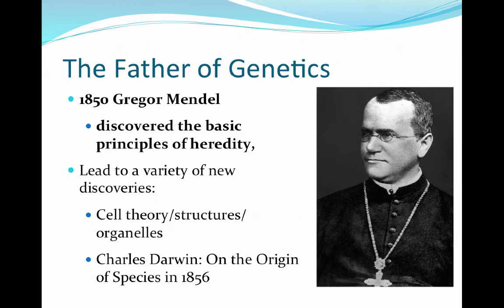And then we get to the father of genetics, Gregor Mendel, who was a monk. He discovered the basic principles of heredity using pea plants. He was able to identify that certain structures on peas — whether the color of their flower or the type of seed coating, wrinkled or smooth — were translated from one generation to the next, and offspring had a direct result from the parents. We're going to study his work very intensely in chapters three and four. A lot of Mendel's work led to discoveries such as cell theory, the cell's ability to have structures and organelles, and Darwin's publication on the origin of species, published in 1856.